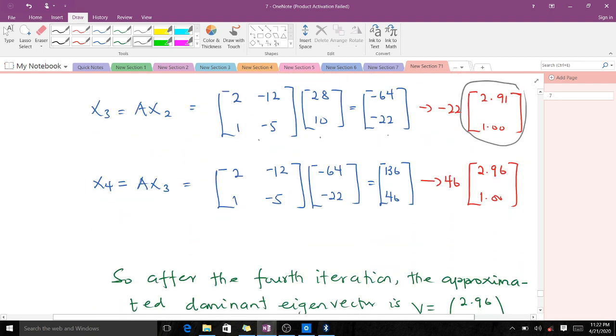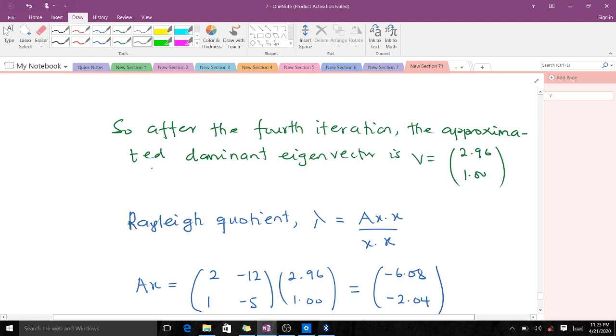After the fourth iteration, x₄ = Ax₃. To make the bottom element 1, we bring 46 out. After our fourth iteration, the approximated dominant eigenvector is v = (2.96, 1.0). You can continue iterating, but the question asks for just four iterations.